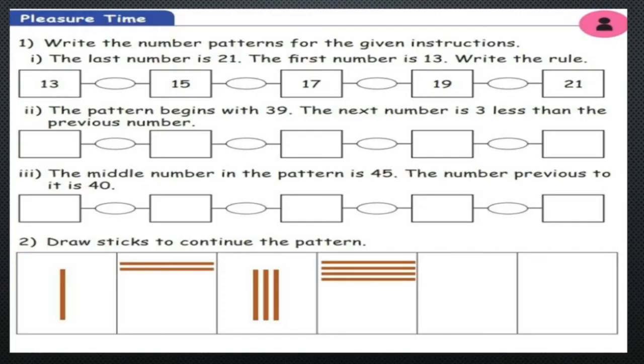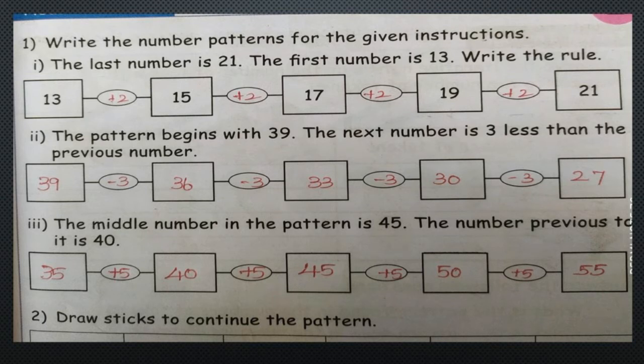Write the number patterns for the given instructions. The last number is 21 and the first number is 13. The difference between 13 and 15 is plus 2 — it increases by 2. So 13 plus 2 is 15, 15 plus 2 is 17, 17 plus 2 is 19, and 19 plus 2 is 21.